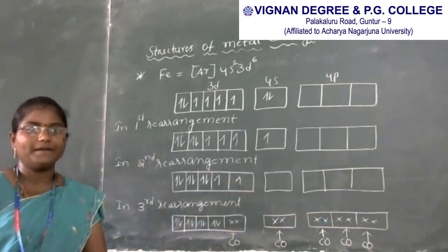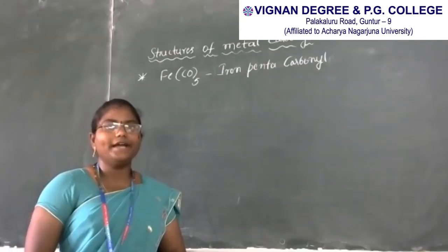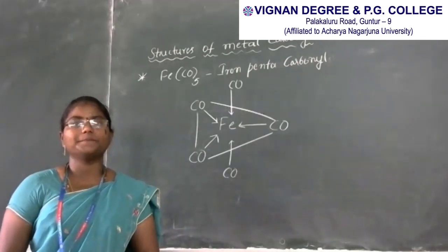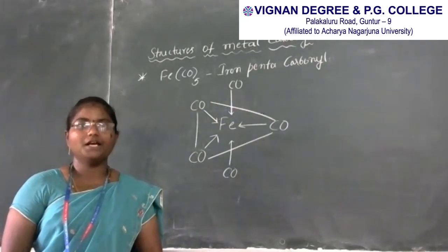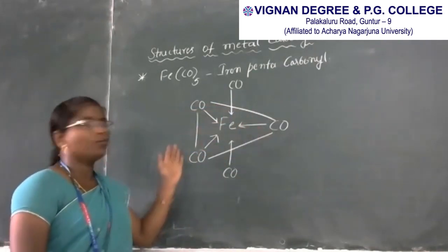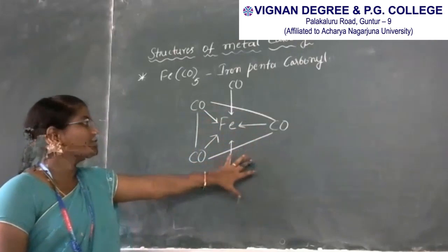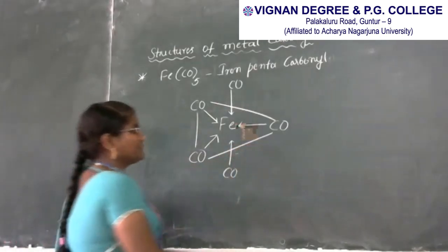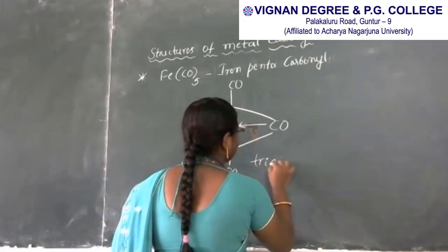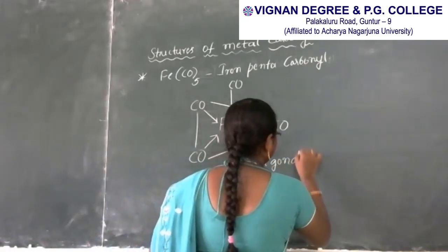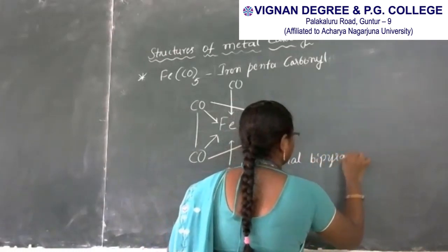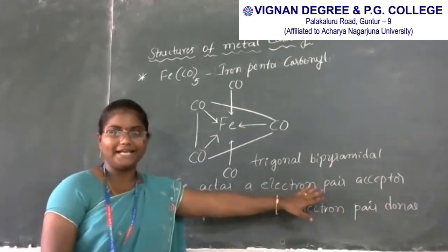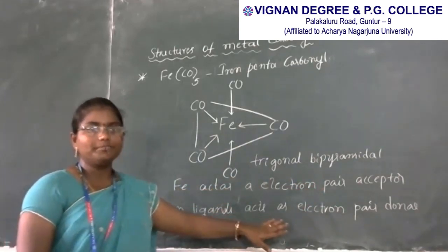The structure of iron pentacarbonyl is trigonal bipyramidal. In this structure, 3 carbonyls are in one equatorial plane, and 2 carbonyls are in axial positions at an angle of 90 degrees. In this metal carbonyl, iron acts as an electron pair acceptor and CO ligands act as electron pair donors.